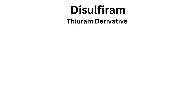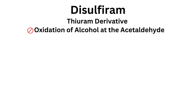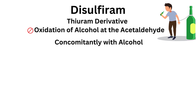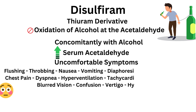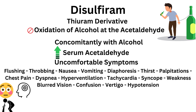Mechanism of action: Disulfiram is a thioram derivative which blocks the oxidation of alcohol at the acetaldehyde stage. When taken concomitantly with alcohol, there is an increase in serum acetaldehyde levels. High acetaldehyde causes uncomfortable symptoms including flushing, throbbing in head and neck, nausea, vomiting, and diaphoresis.